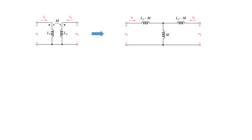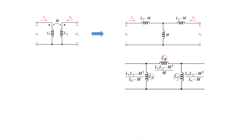This T network is the replacement for the transformer circuit. Similarly, it can be shown that the Pi network, with components La, Lb, and Lc, is equivalent to the transformer in terms of expressions like (L1·L2 − M²)/(L2 − M) and similar terms.